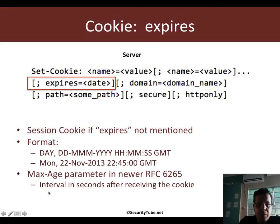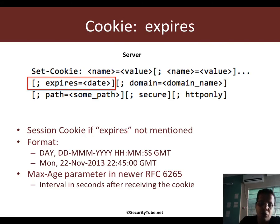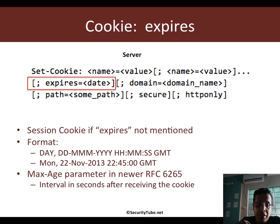Some of the more recent implementations of cookies in RFC 6265 also include a max-age parameter. Rather than giving a date and time on which the cookie expires, max-age basically gives the interval in seconds after which the cookie should be expired. As soon as the browser receives the cookie, the timer starts based on the number of seconds written in the max-age parameter.